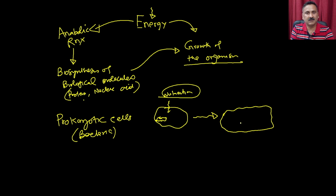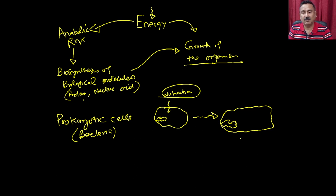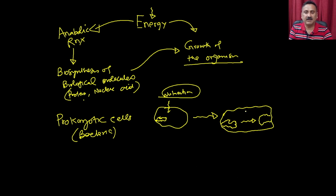The cell also increases its nuclear DNA content. When it goes beyond a certain limit, it makes another copy of the DNA, resulting in two copies. Once it has two copies of DNA, it divides from the center, producing two different bacteria, each with its own chromosome.